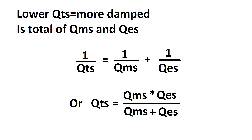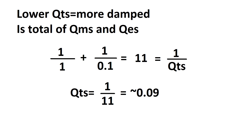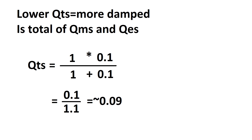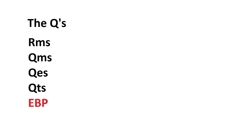To combine QMS and QES into QTS (total damping), we can't simply add them because a smaller Q means more damping. Instead we use: 1/QTS = 1/QMS + 1/QES. For example, a QES of 0.1 and a QMS of 1 gives 1/QTS = 1/1 + 1/0.1 = 11, so QTS = 1/11 ≈ 0.09. QTS is the total natural damping of the speaker.